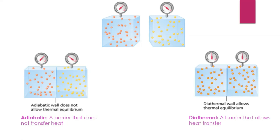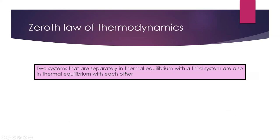We'll go into a more careful definition of heat next time. Heat is a form of energy and we'll talk about the first law of thermodynamics in the next lecture. The zeroth law of thermodynamics tells us that two systems separately in thermal equilibrium with a third system are also in thermal equilibrium with each other. This allows us to determine if two systems are in thermal equilibrium without bringing them next to each other — we put a device in one system, then the other, and if it reads the same value, all three are in equilibrium. That device is a thermometer.